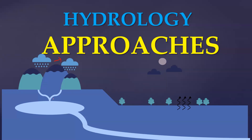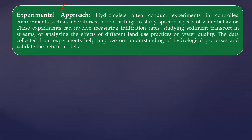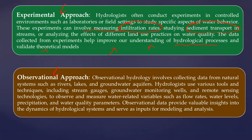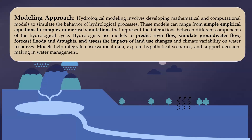Looking at approaches and applications in hydrology: the first approach is the experimental approach — based on experiments in labs or field settings, such as measuring infiltration rates and studying sediment transport, which helps validate theoretical models. The second is the observational approach — using instruments like stream gauges, groundwater monitoring wells, and remote sensing data to derive input-output models. The third is the modeling approach — using equations and complex numerical simulations, for example predicting when floodwaters will reach a certain point, simulating groundwater flows, forecasting droughts, and assessing the impact of land use changes and climate variability.